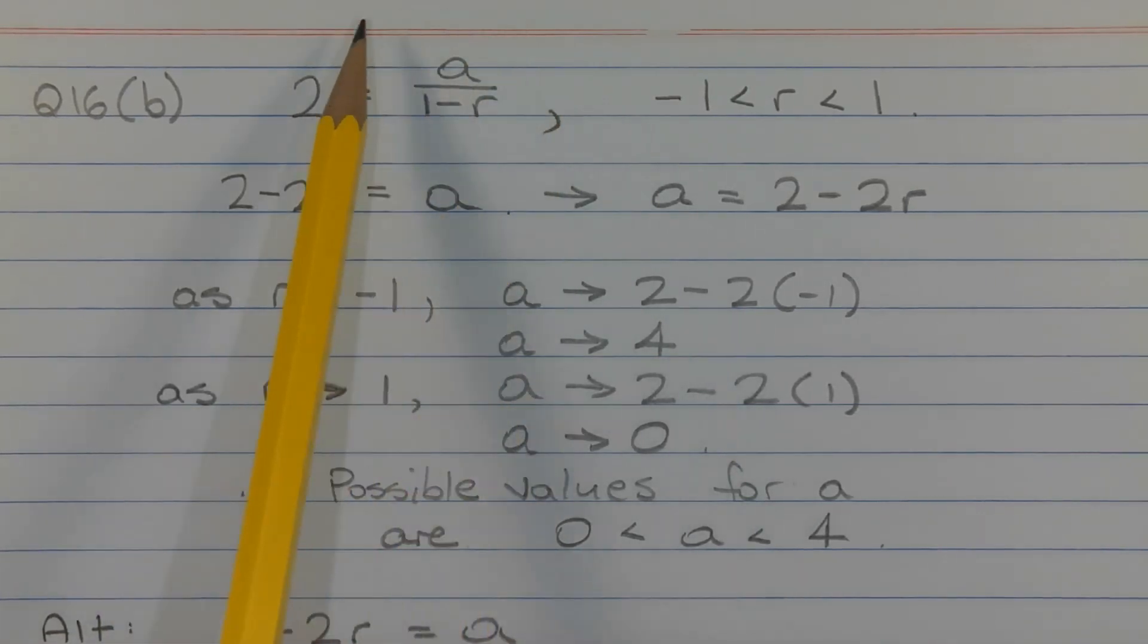So what I'm going to do is rearrange this equation and isolate the A. In other words, make A the subject. So I'm going to multiply the 2 by 1 minus R. We get 2 minus 2R is equal to A. Making A the subject on the left-hand side of the equation, we get A is equal to 2 minus 2R.